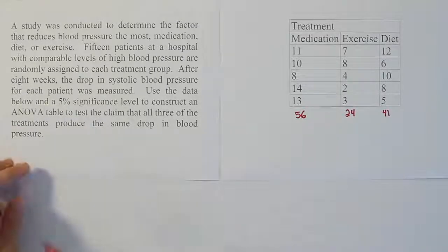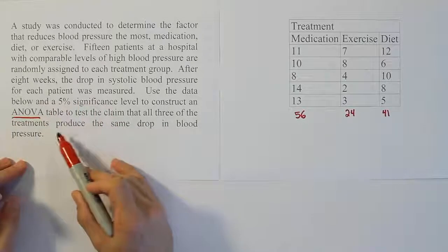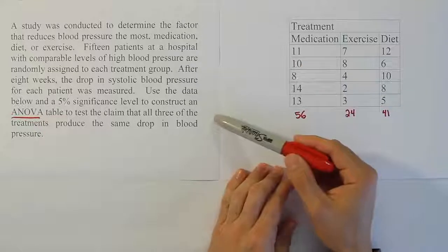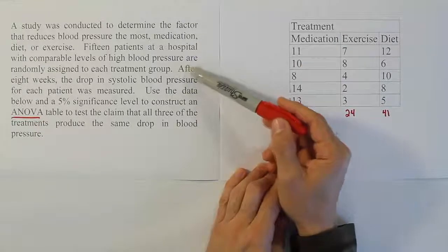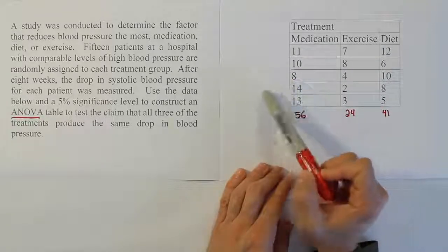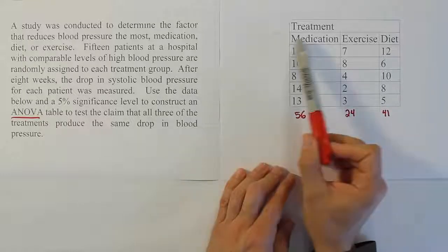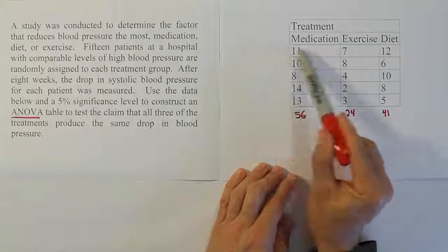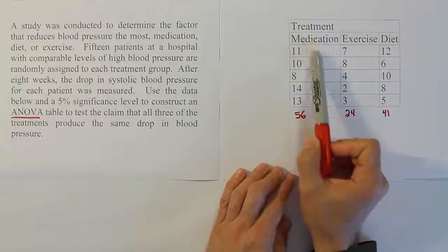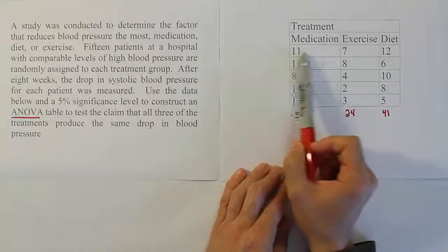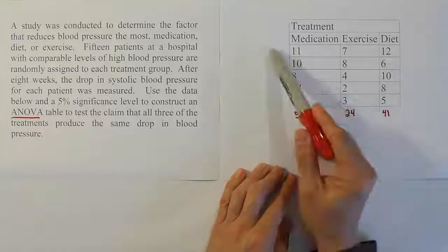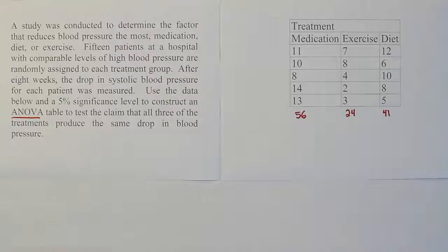We're using an ANOVA table to test the claim that all three treatments produce the same drop in blood pressure. First, we check whether the data is from a completely randomized design experiment. The problem indicates 15 patients were randomly assigned to each treatment group, which clearly indicates completely randomized design. There are no row labels categorizing individuals into additional groups — if there were, say, a label like 'Caucasian,' we'd have a two-way table and might be dealing with a randomized block design. Since there's no other cross-categorization, we assume completely randomized design.